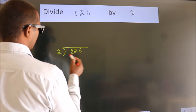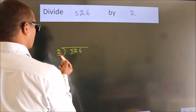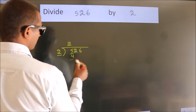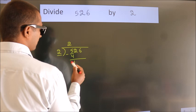Here we have 5, here 2. A number close to 5 in 2 table is 2 times 2, 4. Now we should subtract. We get 1.